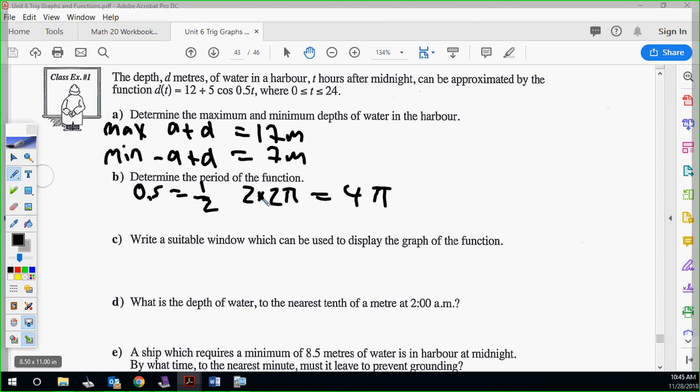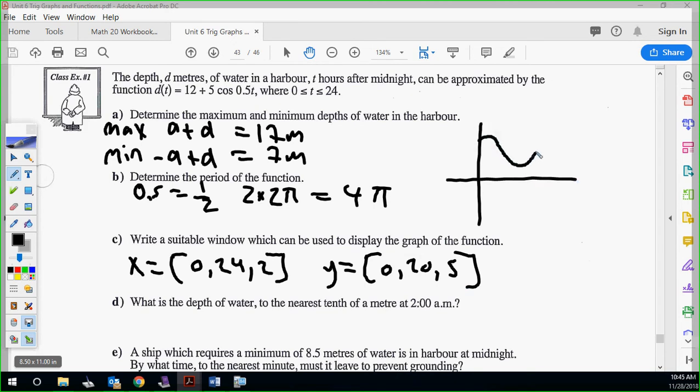I'll just go ahead and save you guys a little time, but the suitable window which we're going to use is 0 to 24, go by 2s for x. We are 0 to 20, go by 5s for y. And when you do this, the graph's going to look something along the lines of this.